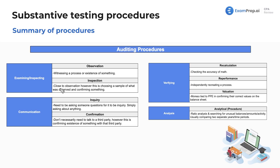We've also got the process of inspection. This is similar to observation; however, this is the process of choosing a sample of what was observed and then confirming something related to that.